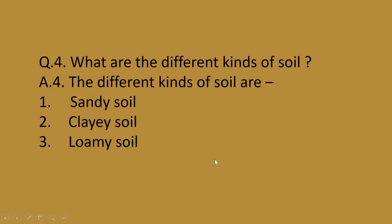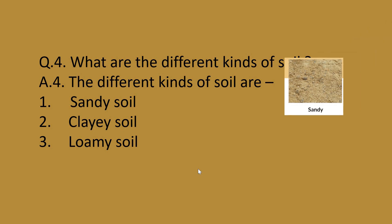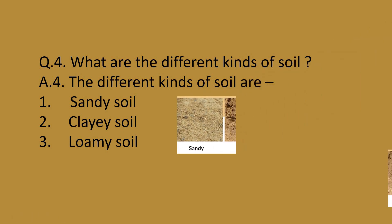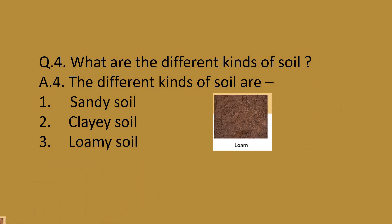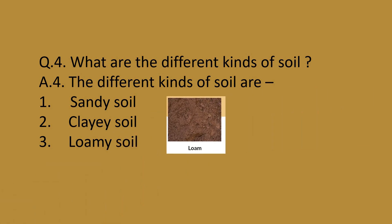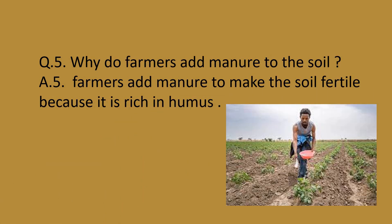Question 4: What are the different kinds of soil? The different kinds of soil are sandy soil, clay soil, and loamy soil. Fifth question: Why do farmers add manure to the soil? Farmers add manure to make the soil fertile, because it is rich in humus.